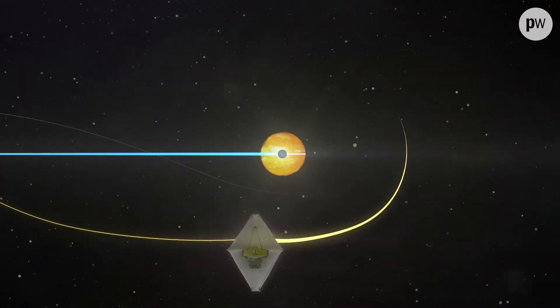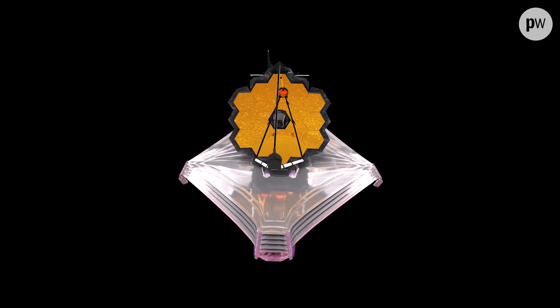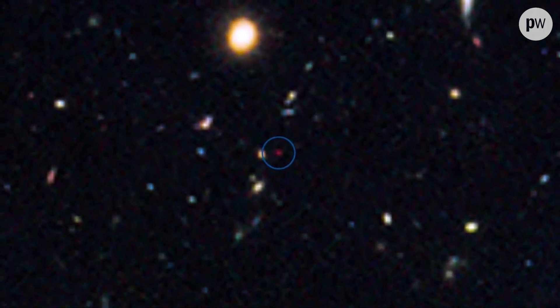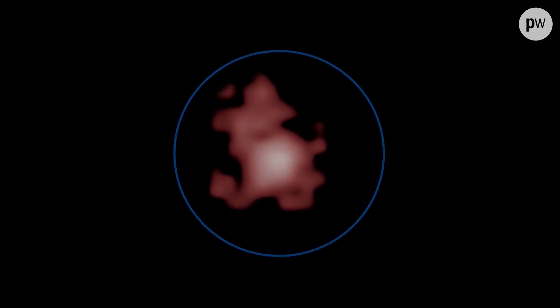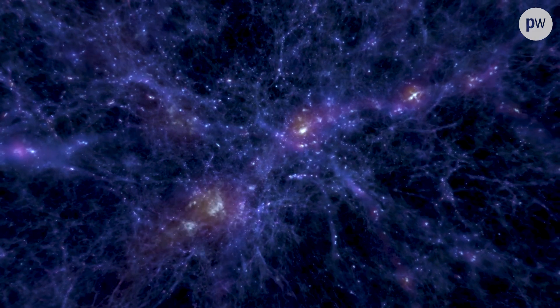JWST is so far away because its instruments operate at extremely low temperatures. The telescope is searching for faint light from the early universe using high-resolution near- and mid-infrared cameras.